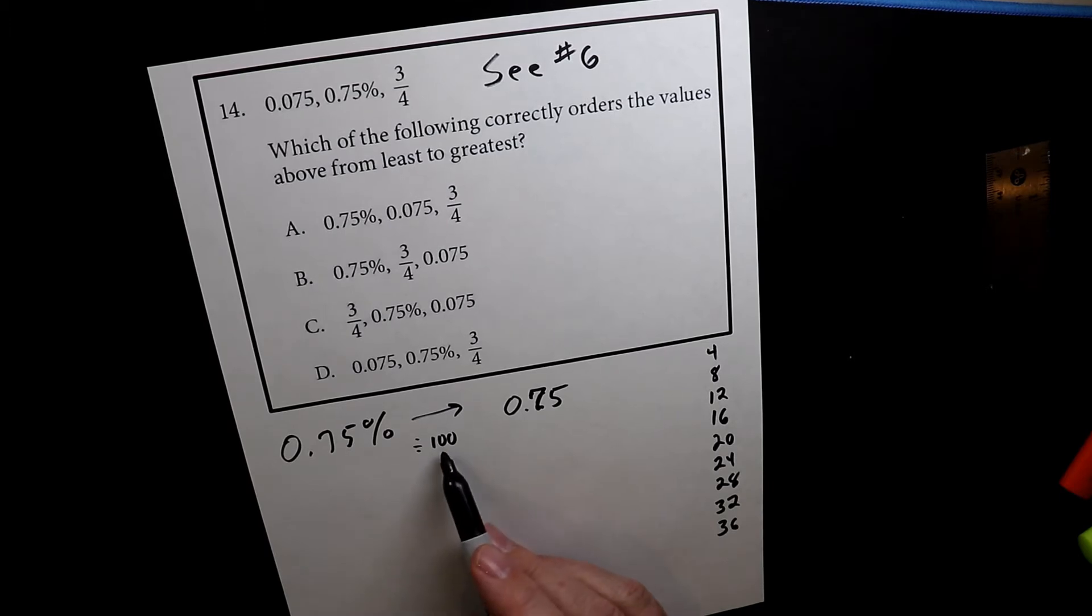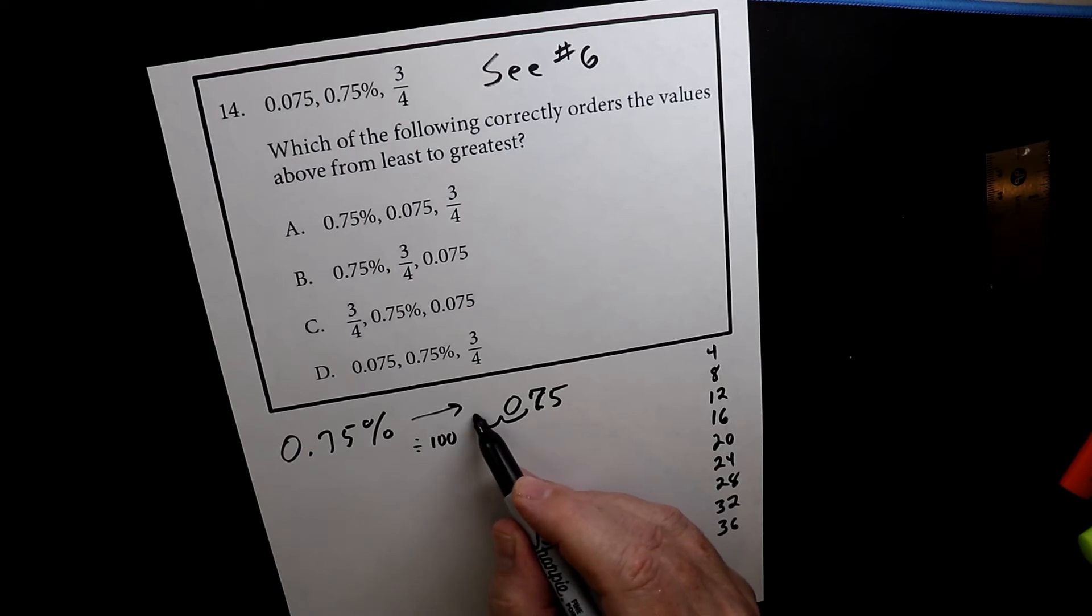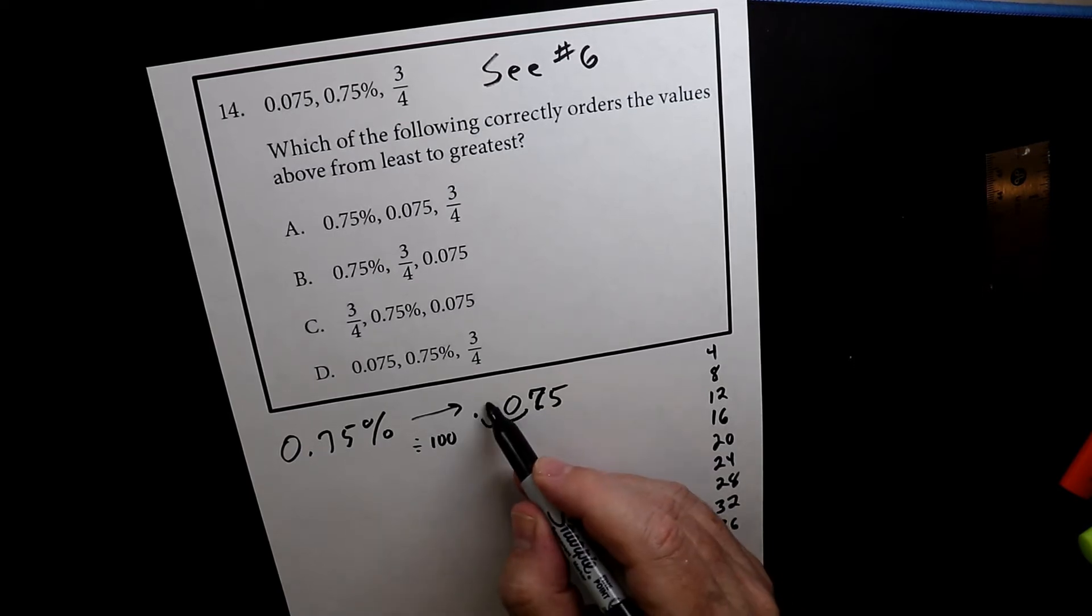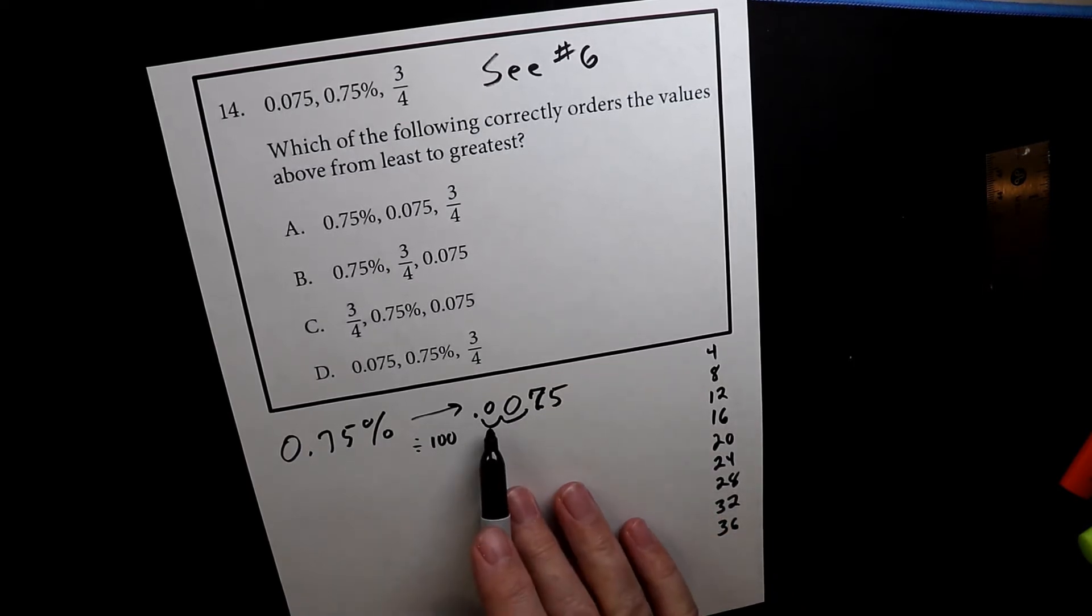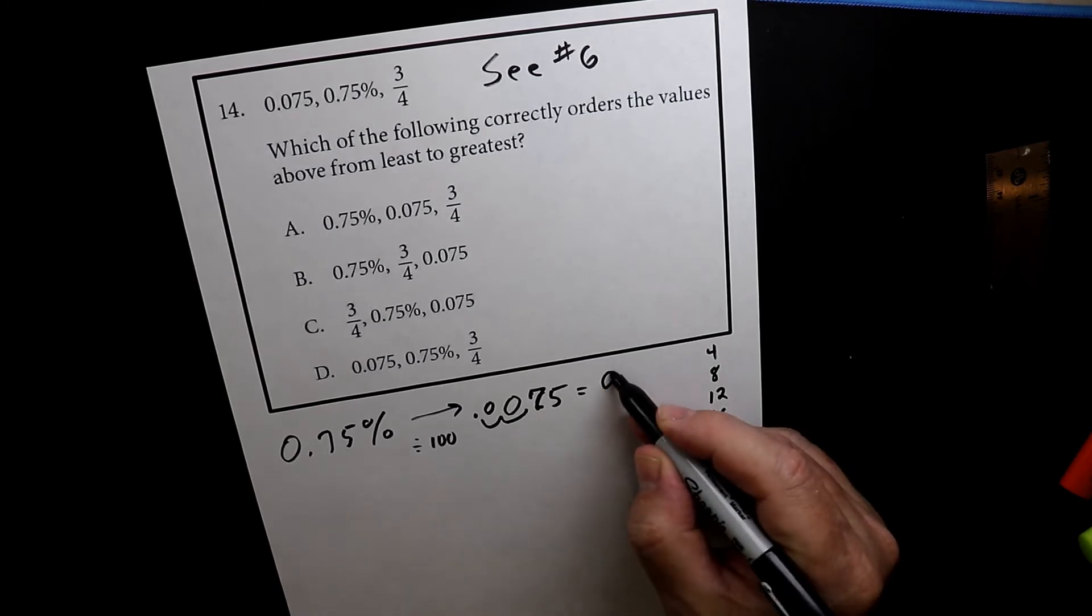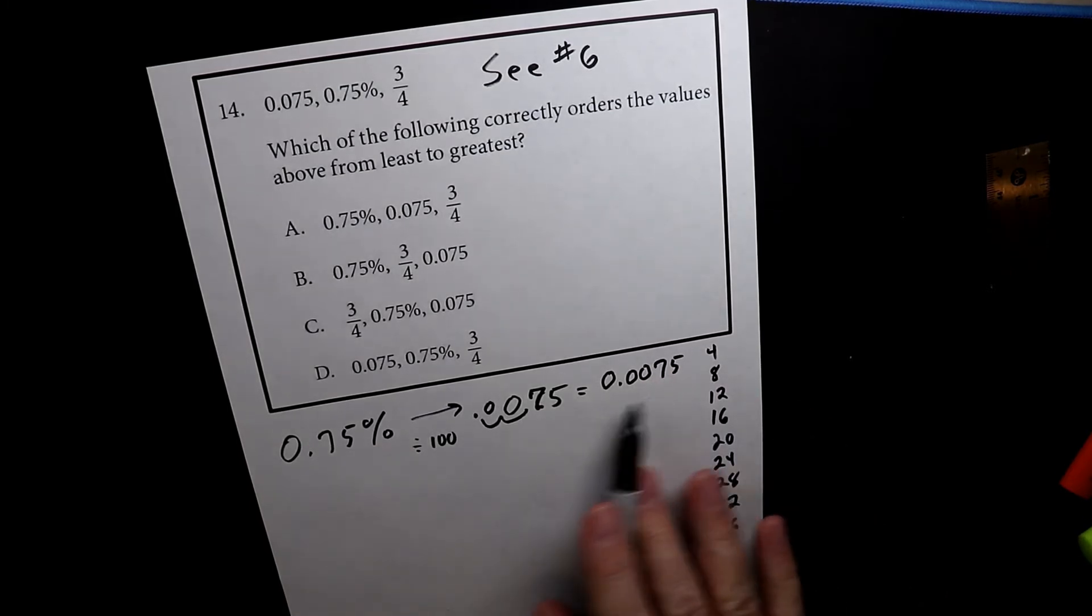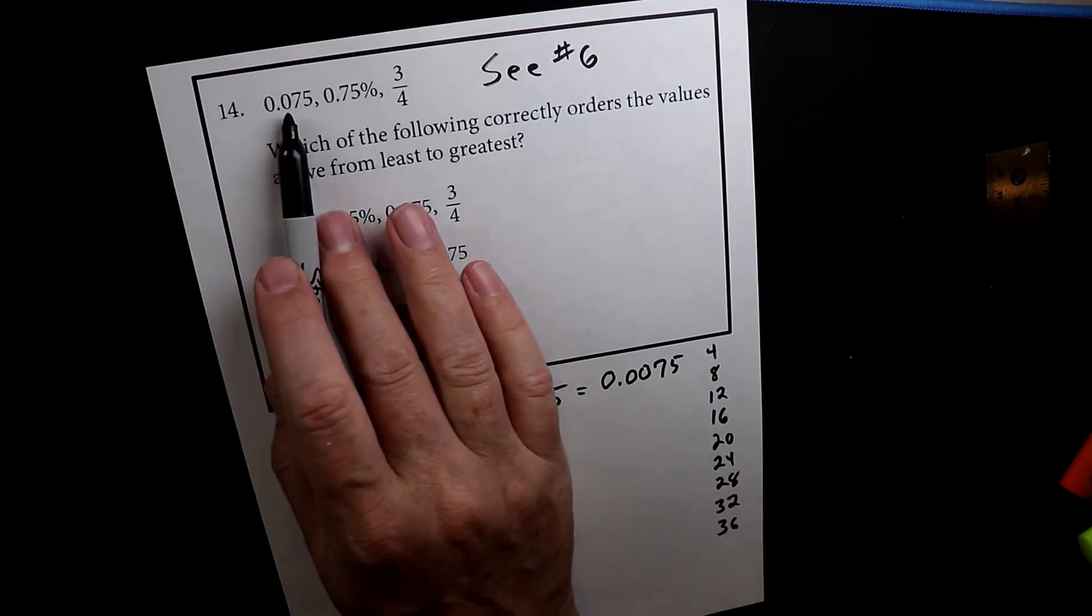So there's two zeros there. So I move it over two spaces. One, two. So now the decimal lives right there. Bring the zero there. So the new value equals 0.0075. So that's one. So I can see right away that this number is smaller than this one.